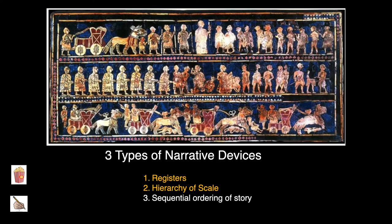Within the Standard of Ur, we see three narrative devices being used. One is the register — horizontal bands containing decorative or narrative imagery; the term is normally used when a work of art is organized in multiple horizontal bands. Second is hierarchy of scale, a system used to visually communicate power in Egyptian as well as the art of other cultures, including the ancient Near East. Important individuals such as a pharaoh are depicted as being much larger than other figures in the scene, and these figures are also placed in the center.